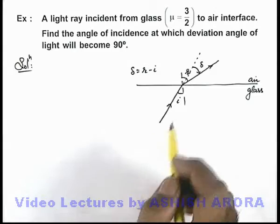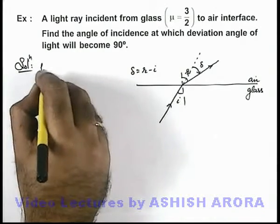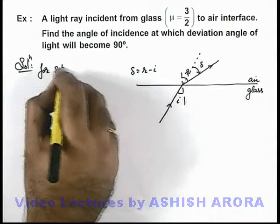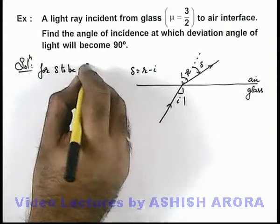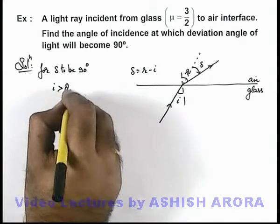So here we can directly state, for delta to be 90 degrees, i must be more than the critical angle.